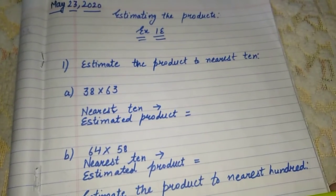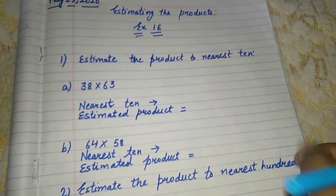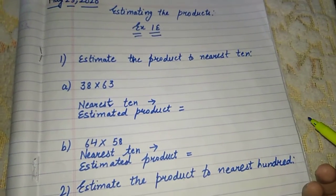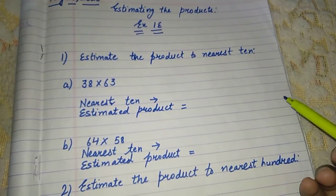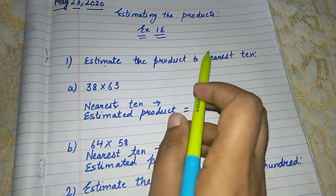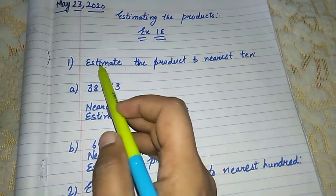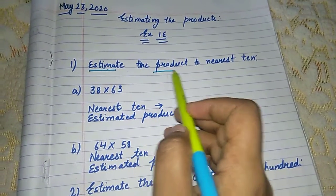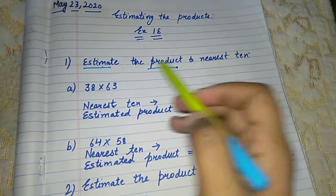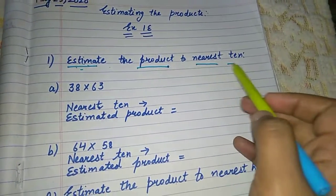So in my previous lecture, I have discussed about the rounding of number to nearest ten, hundred and thousand. And in that, I have also discussed how to estimate the addition, that means sum and difference. So today we will discuss estimate the product. Product means multiply.